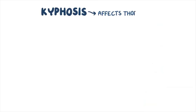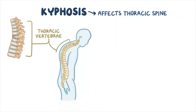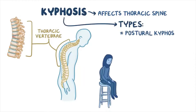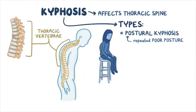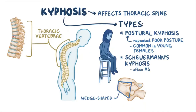Kyphosis mainly affects the thoracic spine and usually occurs when the front of the thoracic vertebrae gets deformed or crushed, causing the spine to excessively bend forward — resulting in a rounded back or hump in the upper back. Types include postural kyphosis from repeated poor posture, most common in young females; Scheuermann's kyphosis, where vertebrae become wedge-shaped and are often associated with scoliosis (kyphoscoliosis); and congenital kyphosis, where vertebrae are deformed during fetal development.